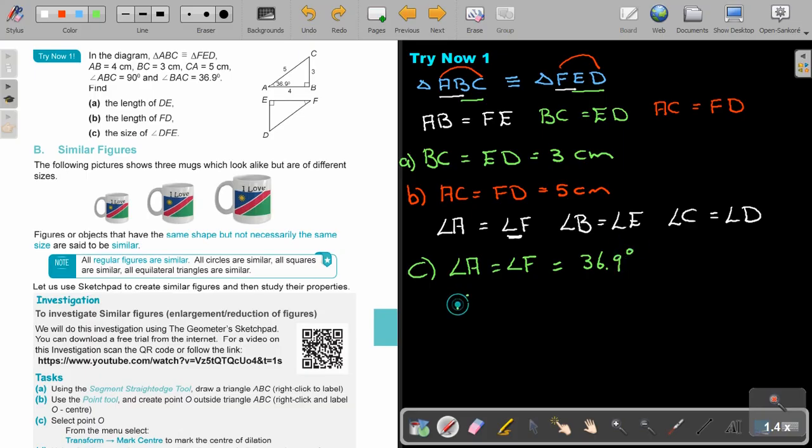So, therefore, we can just write it. Angle DFE equals 36.9. I'm just naming it a bit different, like the way they did. But it's referring to angle F. And that's how you do congruent figures. In the next video, we will look at similar figures.